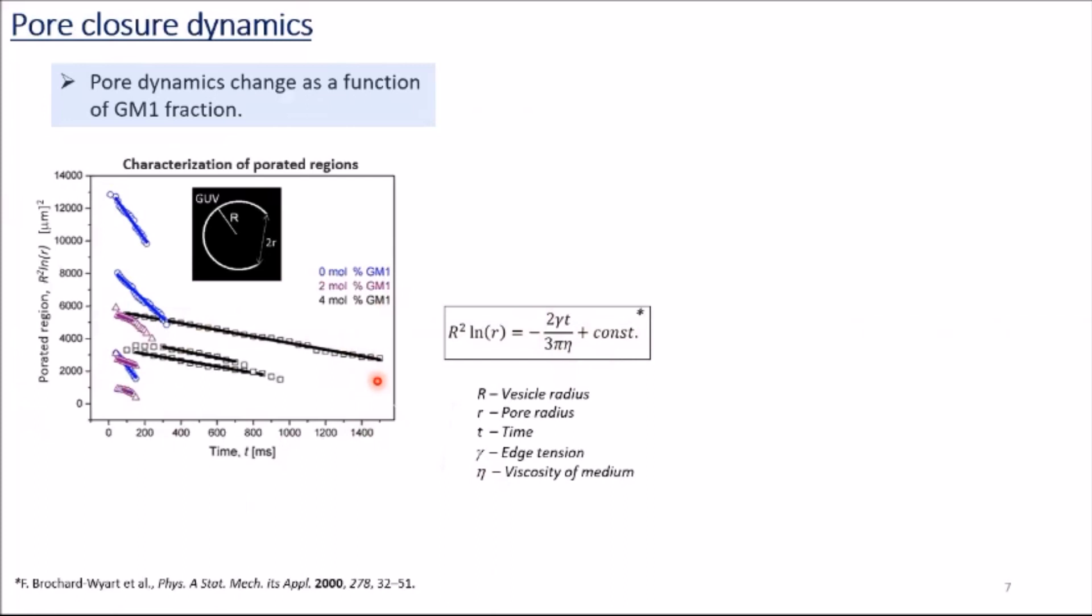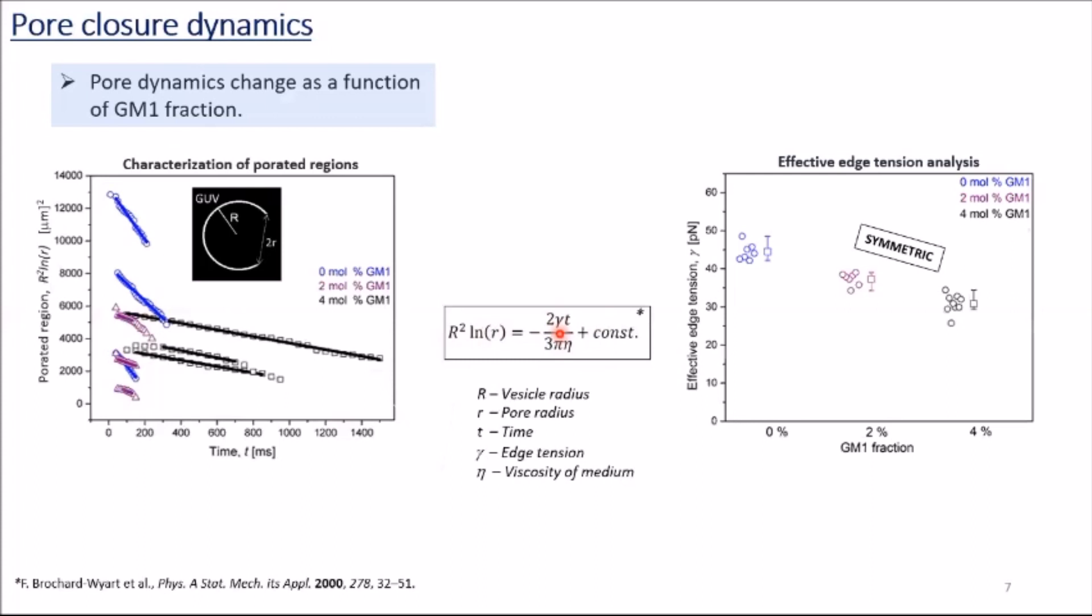Edge tension could be calculated from the slope of the linear fits of these datasets. Then, I plotted the graph on the right side. First, I will show you symmetric GUVs. In symmetric conditions, GM1 concentration slightly decreased the edge tension. Now, solid circles illustrate diluted conditions. For GM1-free GUVs, since dilution didn't cause any change, their edge tension values remained the same. However, with the effect of asymmetry, there was a big decrease in edge tension. So, we could say that increasing GM1 fraction and asymmetry decreased membrane edge tension.